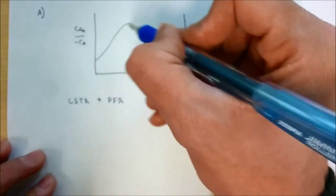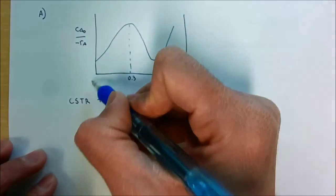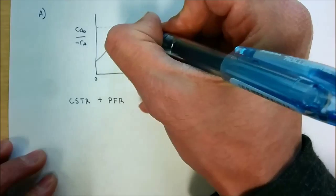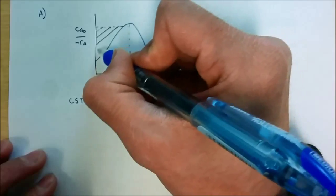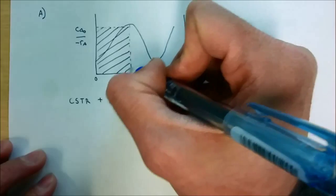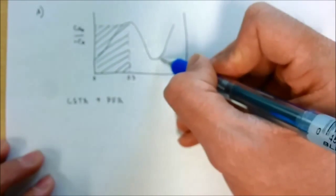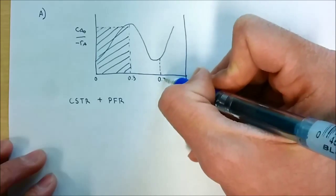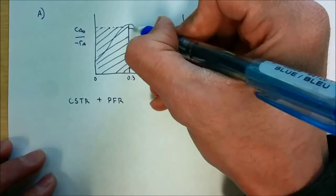If we use the first scenario — CSTR followed by PFR — at X = 0.3, using the CSTR we have to calculate the area of the rectangle up to conversion 0.3. Then, using the PFR from 0.3 to 0.7, we have to calculate the area under the curve to find the volume of the PFR.